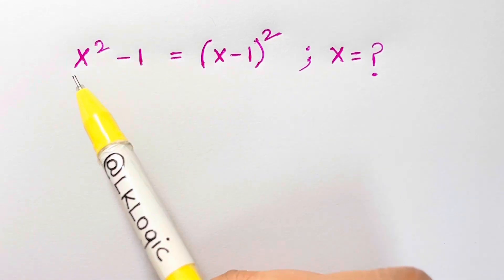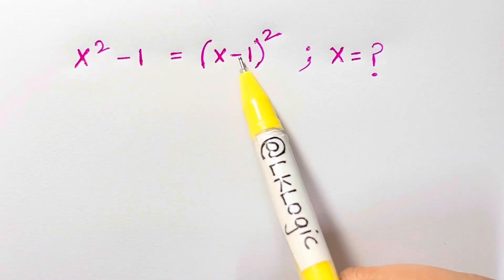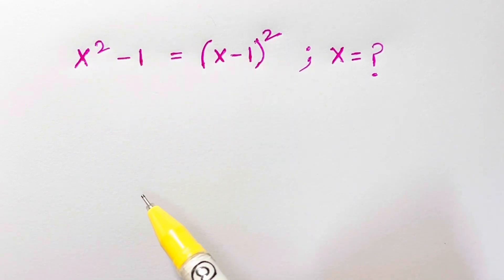Hi guys, I have a very lovely equation here: x squared minus 1 equals x minus 1 the whole squared. How would you solve this?